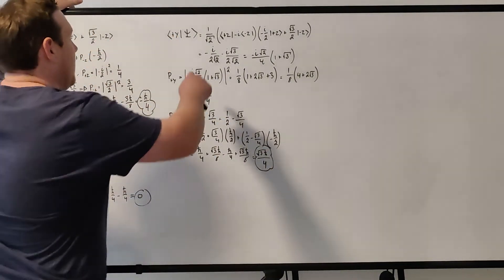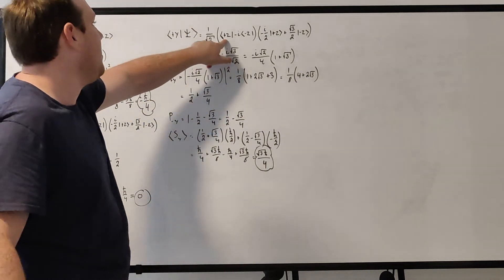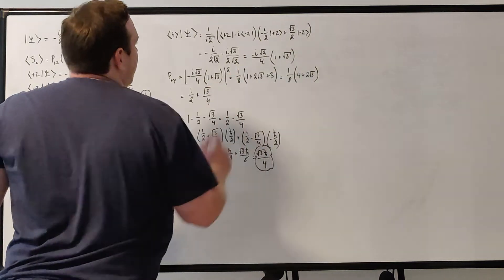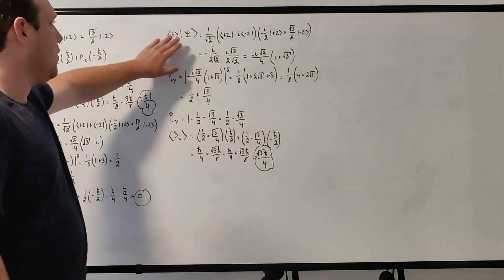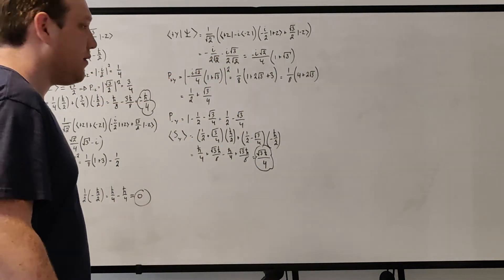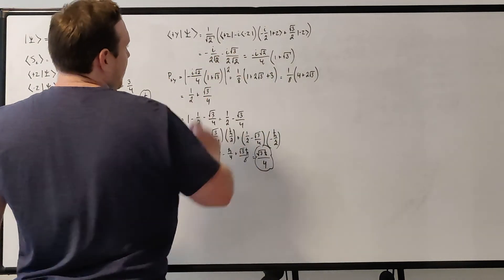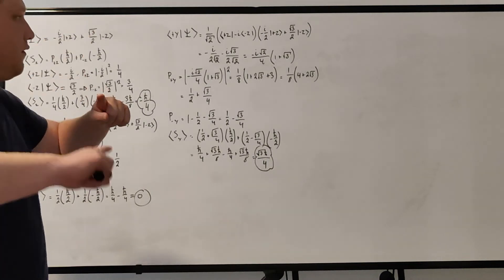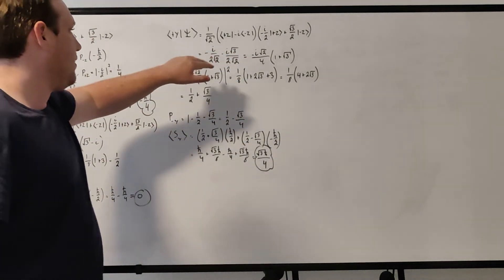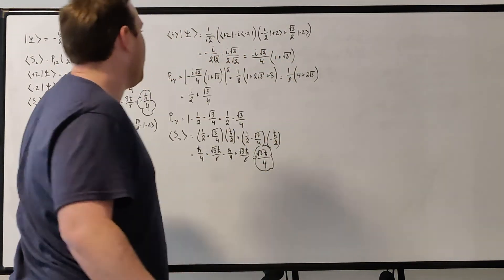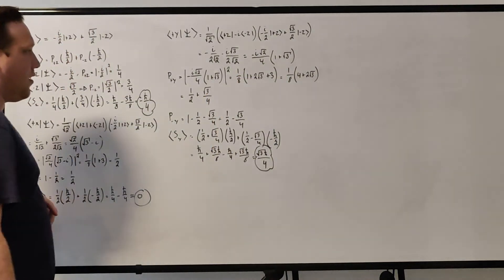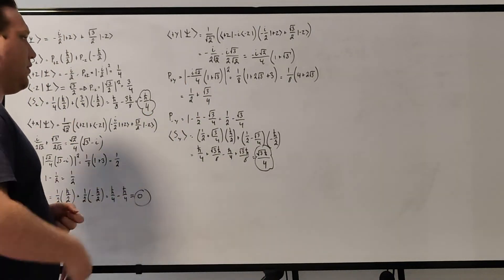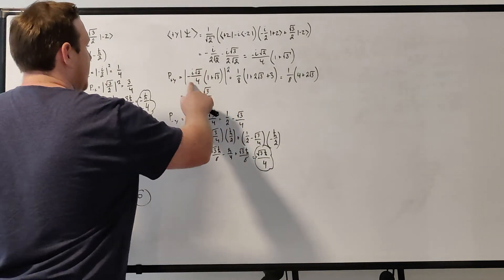Let's do y now. We have plus y written as 1 over root 2 times (plus z minus i times minus z) in the bra form. Taking that state and multiplying it by our psi state, what we get is minus i over 2 root 2 minus i root 3 over 2 root 2. That equals minus i root 2 over 4 by factoring out minus i over 2 root 2, and 1 over 2 root 2 equals root 2 over 4. When you factor it out, you're left with 1 plus root 3 inside. That's the inner product — take the magnitude squared, and since this is a complex number you flip the i on the other term.